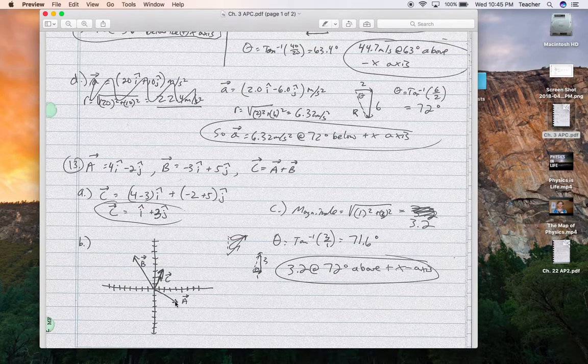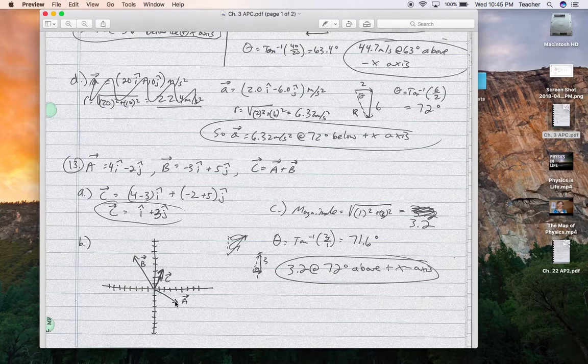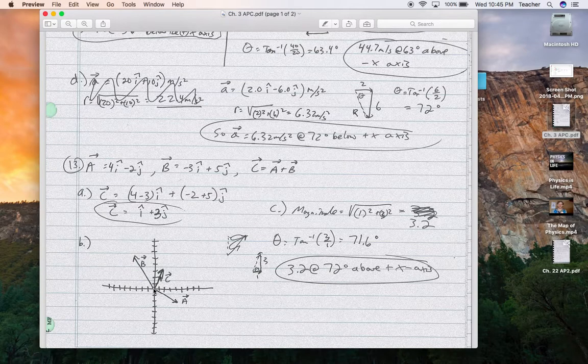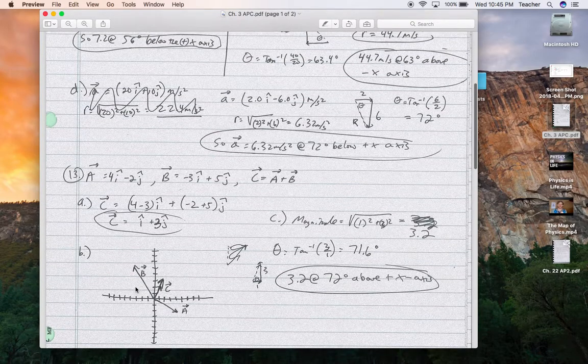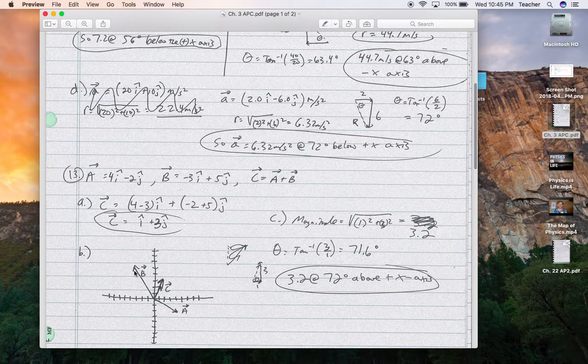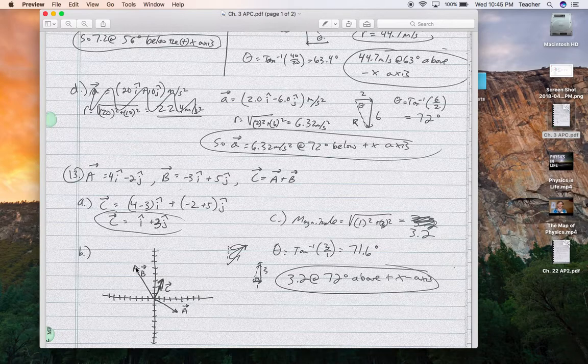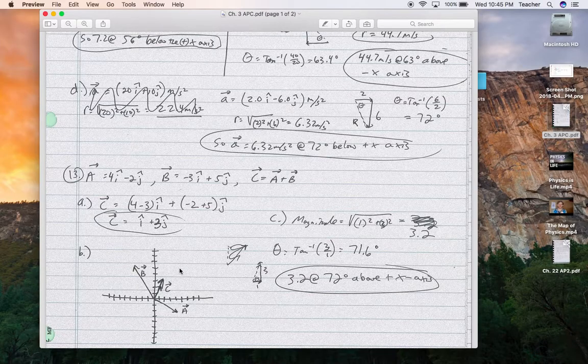So here we've got vector A, which is negative 2j and positive 4i. Vector B, negative 3i and positive 5j. And then this would be the resultant. So if we added A and B tip to tail, it would end up at that same spot.